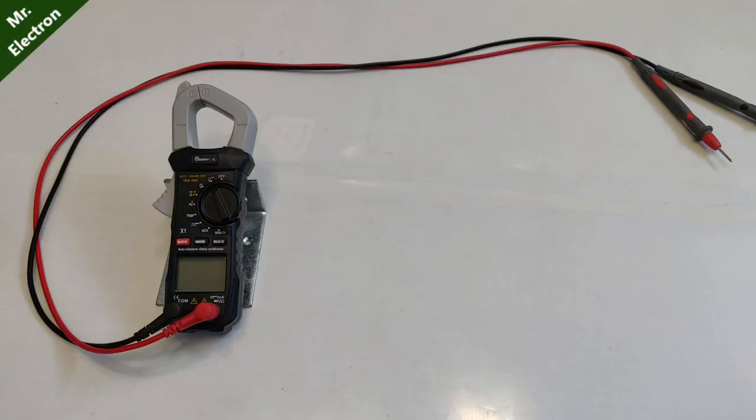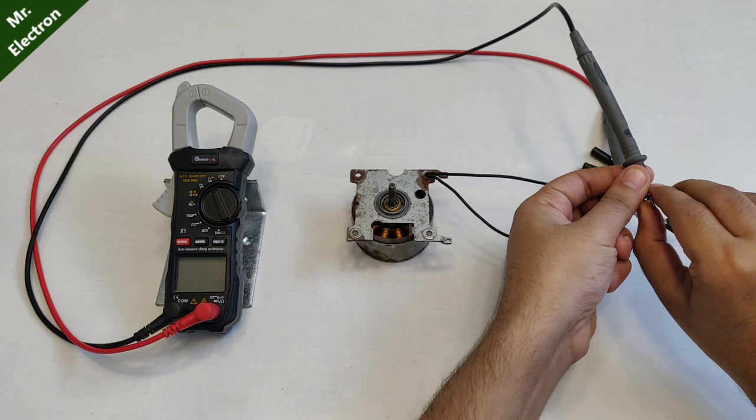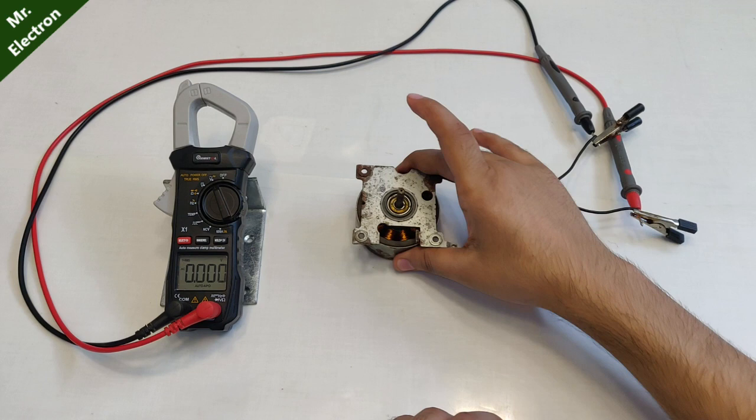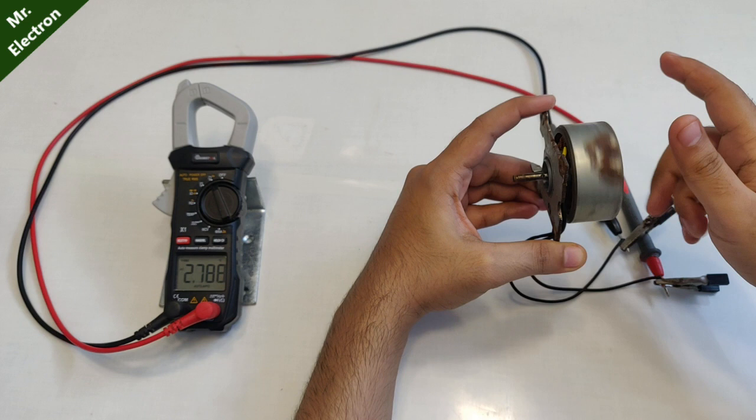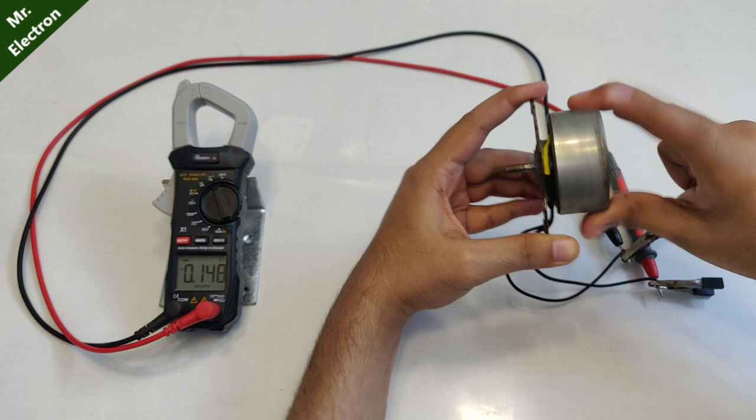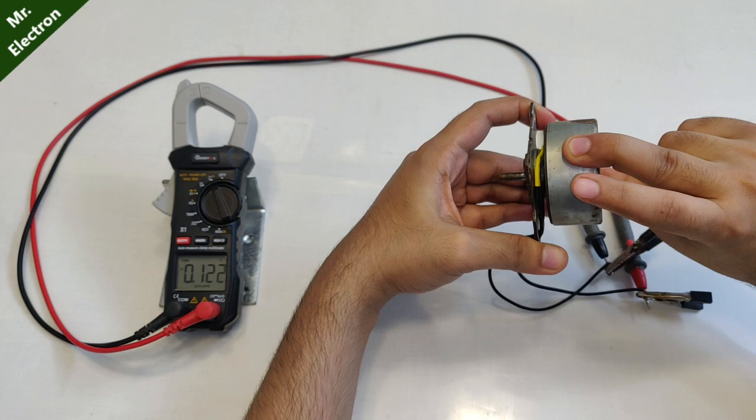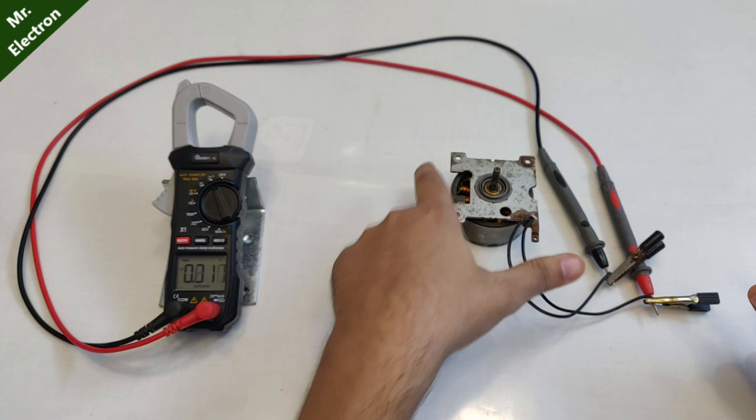Well guys, it's time to do the multimeter testing. So the good thing is that we have only two wires coming out of the armature. Let's see. You see, around four volts, three point nine, four point five, four point eight, five point six volts, five point eight. So yeah, almost six volts from the hand rotation single phase AC.